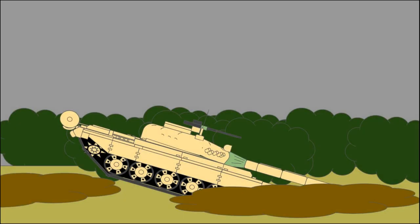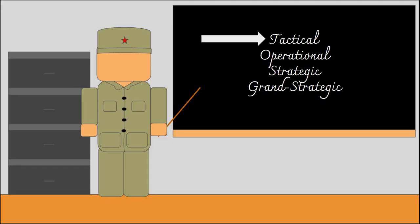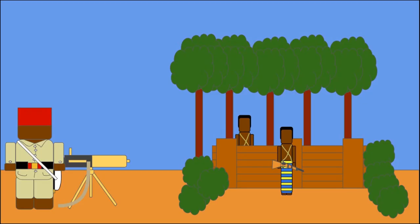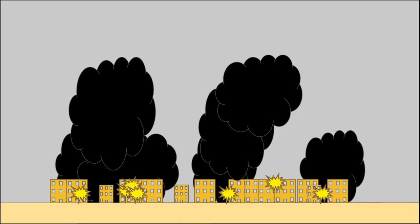These four words refer to levels of planning and military activities. The smallest is the tactical level, and can mostly be summed up as battles. If there are two armies fighting to capture, say, a city, that is on the tactical level of things. It is intended to fulfil, primarily, a singular military objective.